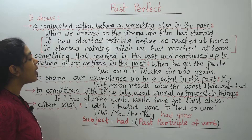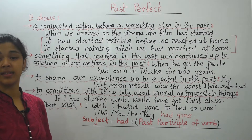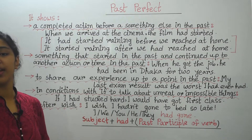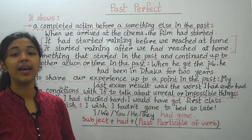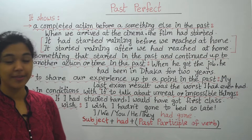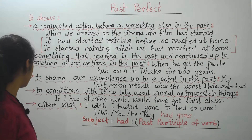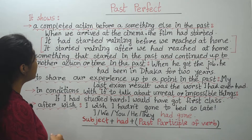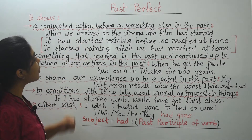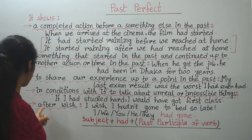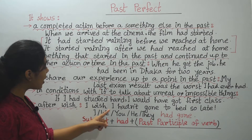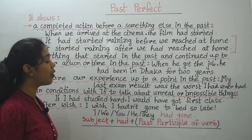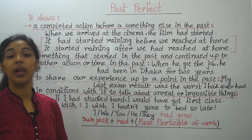Example of an 'if' condition: 'If I had studied hard, I would have got a first class.' But right now it is impossible because I hadn't studied hard. And finally, past perfect is also used after 'wish.' Example: 'I wish I hadn't gone to bed so late.'